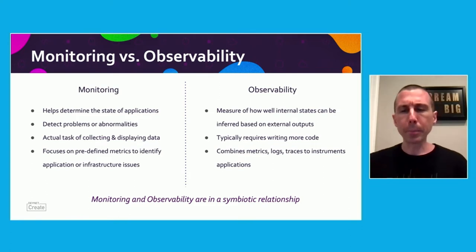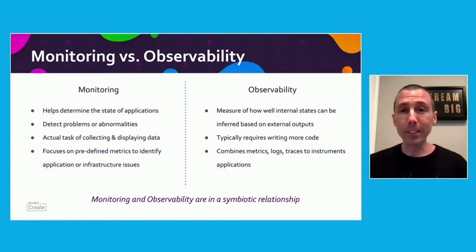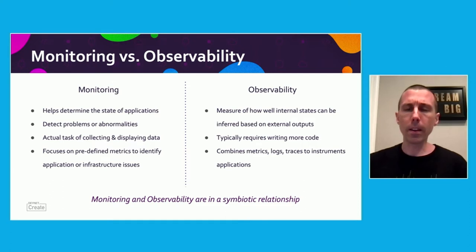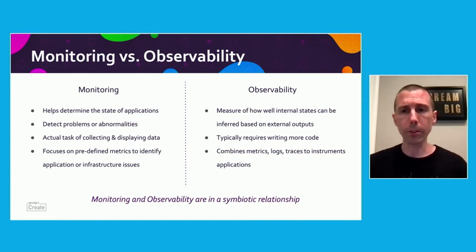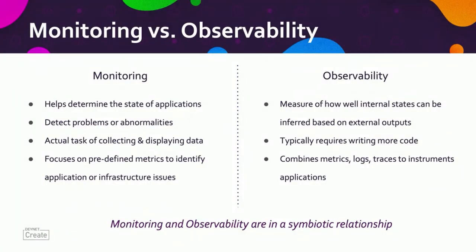Whereas observability, by definition, is really a measure of how well the internal states of an application can be inferred based on external outputs. The way it works is by combining metrics, logs, and traces to instrument applications. A lot of times it requires writing more code — there are different ways to integrate new logging or tracing frameworks. But overall, they're in a symbiotic relationship, with observability taking things to the next level.